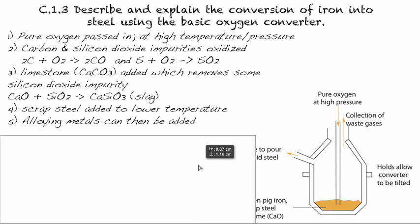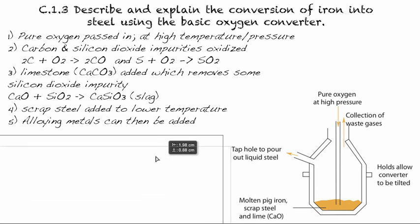And at that point, we can then add alloying materials. So any metals we want to add, for example, like chrome if we want to make stainless steel. And so those can be added in at that point, and then we can tip out what we want to use.